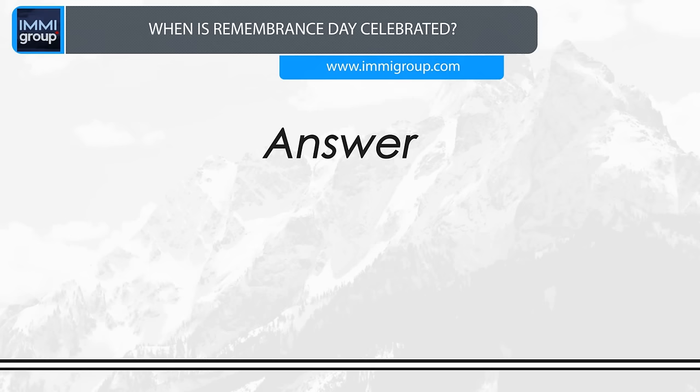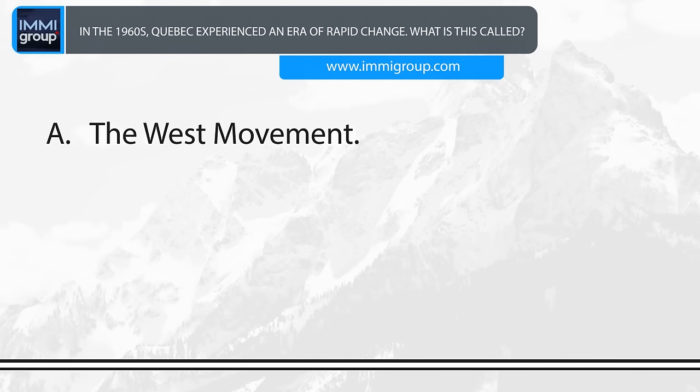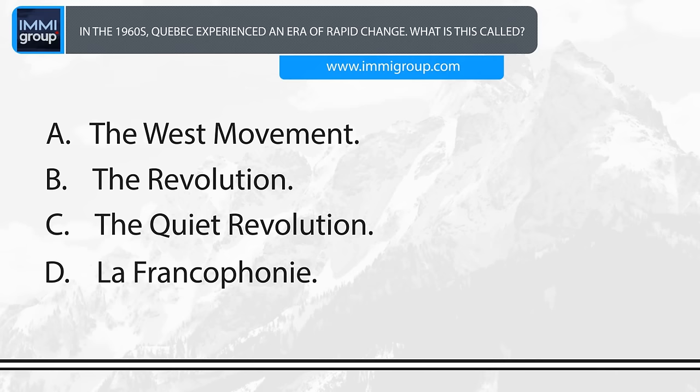In the 1960s, Quebec experienced an era of rapid change. What is this called? A. The West Movement. B. The Revolution. C. The Quiet Revolution. D. La Francophonie. Answer: The Quiet Revolution.